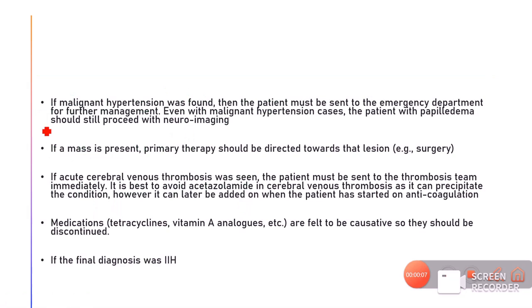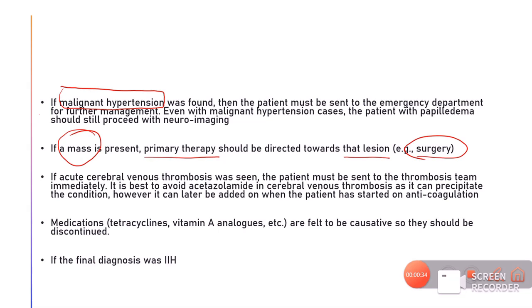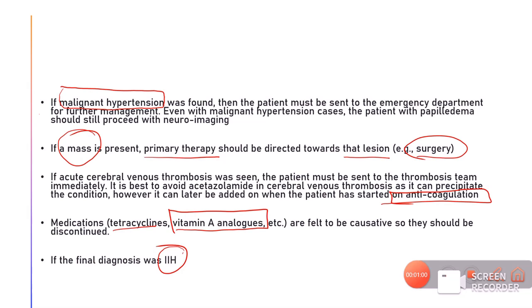In managing papilledema, the first priority is treating the underlying cause. If the patient has malignant hypertension, send them to the emergency department. If a mass lesion is found, primary therapy is directed towards it — mostly surgery. If cerebral venous thrombosis is present, start anticoagulation. If medications like tetracyclines or vitamin A analogs are causing pseudotumor cerebri, advise stopping them. If obesity is causing intracranial hypertension, motivate weight loss.